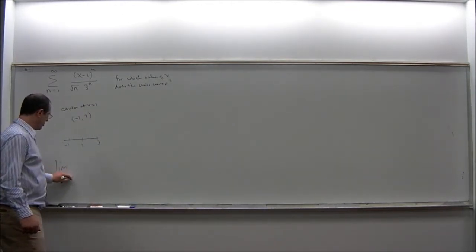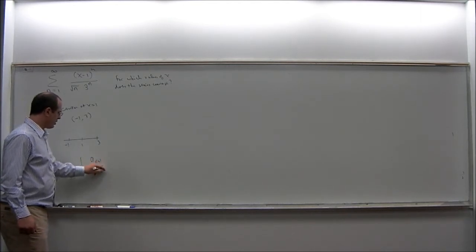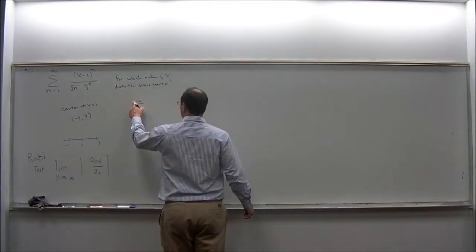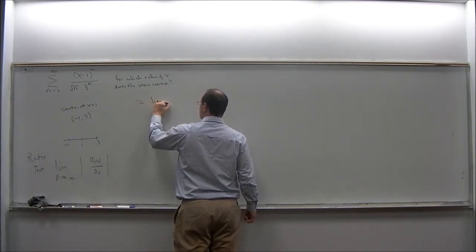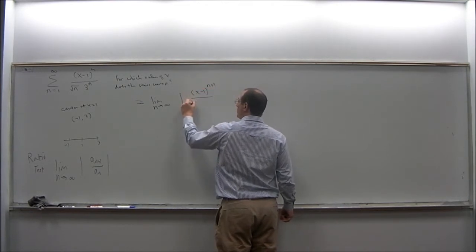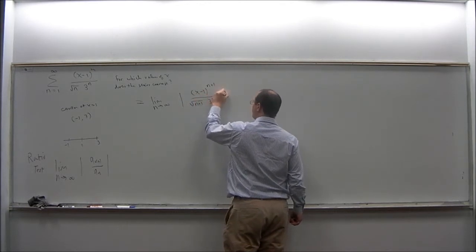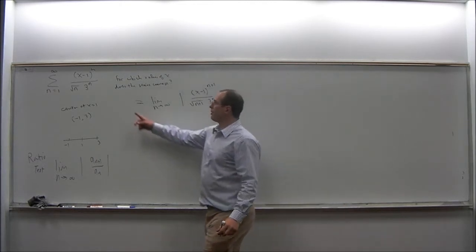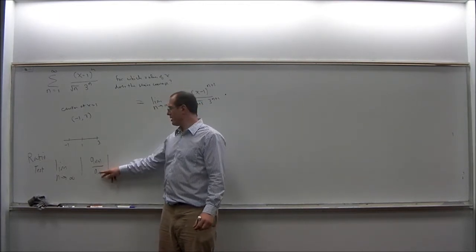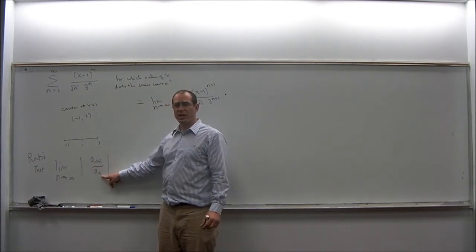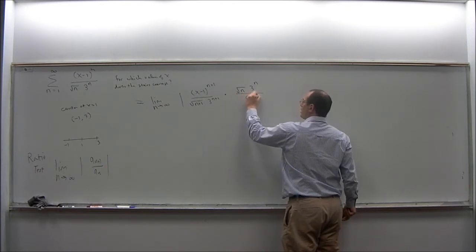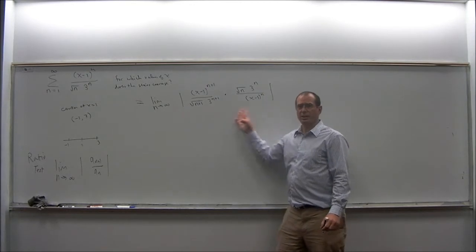So we will compute the limit as n goes to infinity of the absolute value of a_n+1 over a_n using the ratio test. In this example, this is equal to the limit as n goes to infinity of the absolute value of x minus 1 to the n+1 over the square root of n+1 times 3 to the n+1, multiplied by the reciprocal of a_n, which is the square root of n times 3 to the n over x minus 1 to the n. So we need to calculate the limit of this quantity.